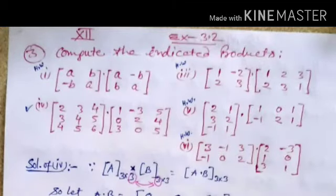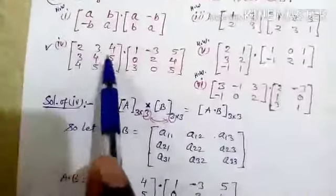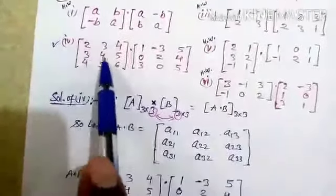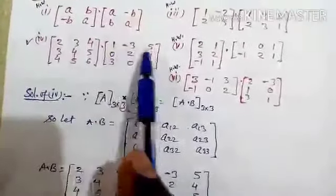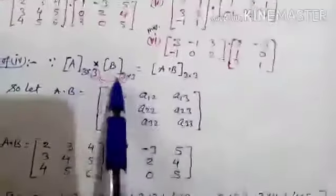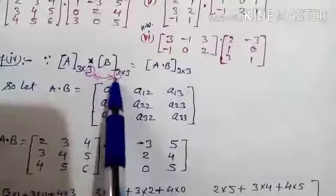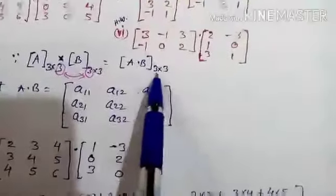There are some more parts in question number 3: 1st, 3rd, 4th, 5th, and 6th. Now we will do only the 4th part; the rest you will try at home. The fourth part has two 3 by 3 matrices. First matrix: [2,3,4; 3,4,5; 4,5,6]. Second matrix: [1,-3,5; 0,2,4; 3,0,5]. Since both are 3 by 3, the product is also 3 by 3.